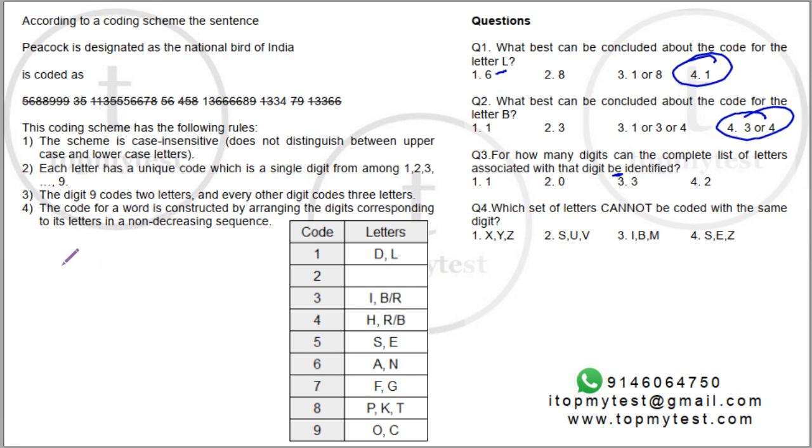How many digits can the complete list of letters associated with that digit be identified? Okay? Now we know each digit codes 3 except for 9 which codes 2. So 9 is completed. 8 is completed. All the others we don't know for sure. So only 2 we know for sure. And the last one.